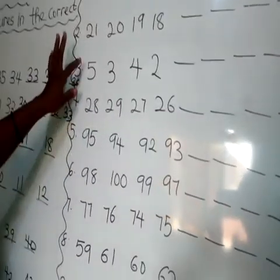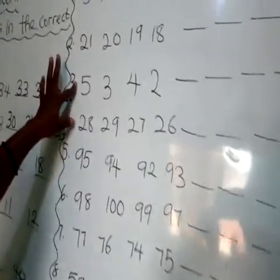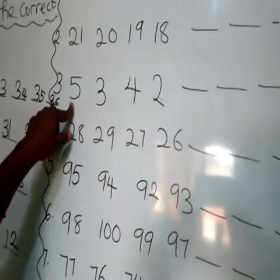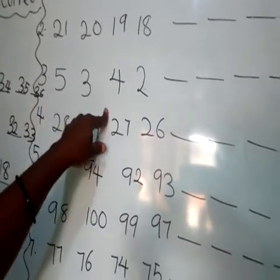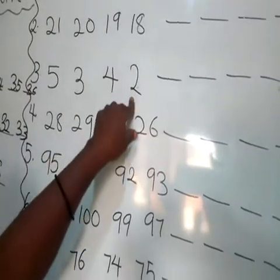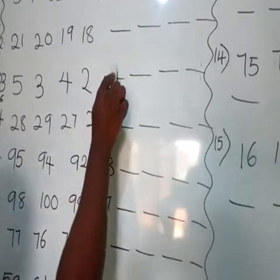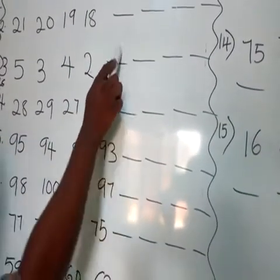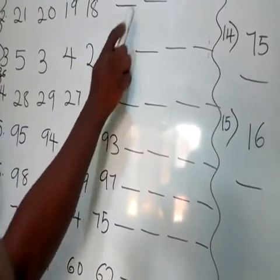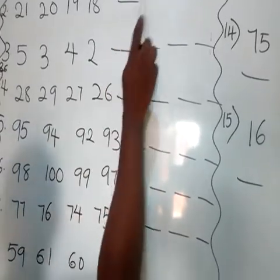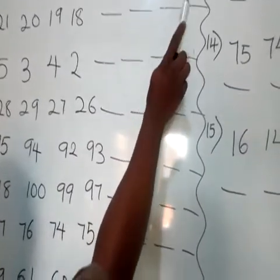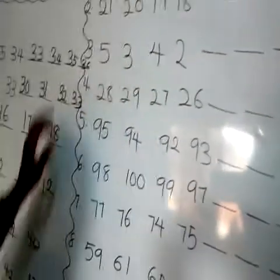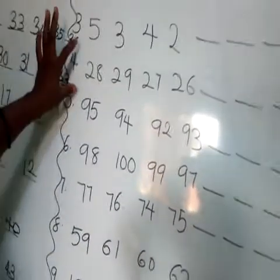Number 3: we have 55, 3, 4, and 2. Which number comes first? We have 2 as our first number, followed by 3, 4, and 5.